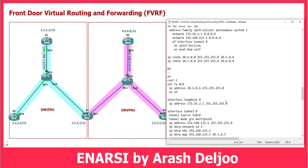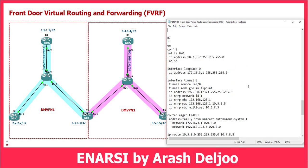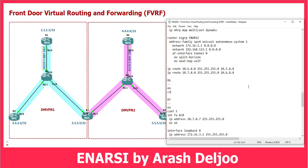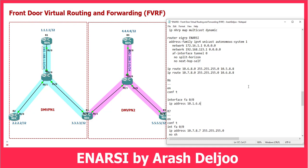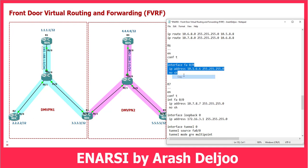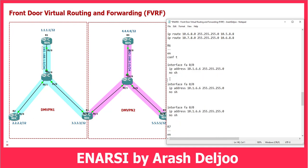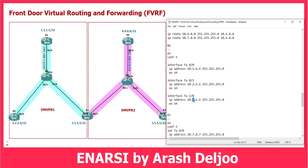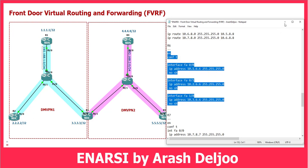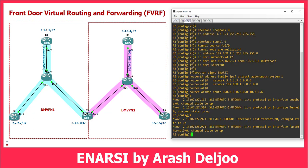Router 6 has three interfaces. Enable, conf t. Interface FastEthernet 0/0: IP address 10.1.6.6 255.255.255.0, no shutdown. Interface FastEthernet 0/1: IP address 10.2.6.6 255.255.255.0. Interface FastEthernet 1/0: IP address 10.3.6.6 255.255.255.0. Let me copy and paste the configuration of Router 6. Now we expect to see the first DMVPN working correctly.